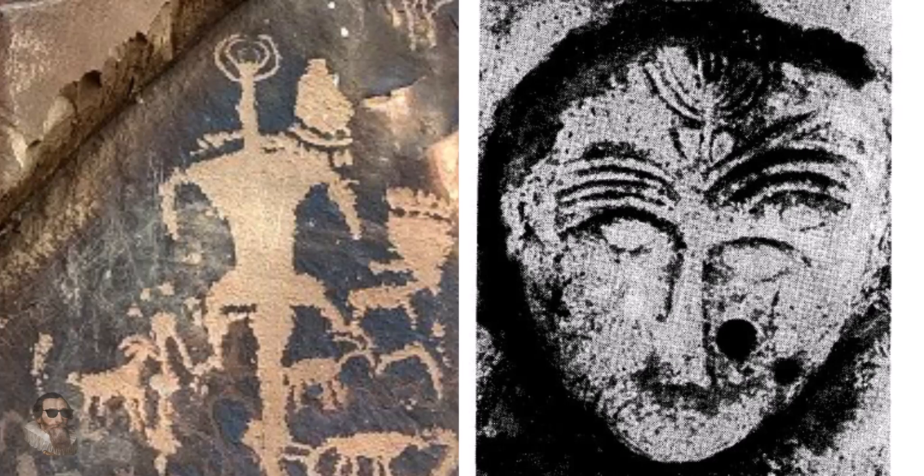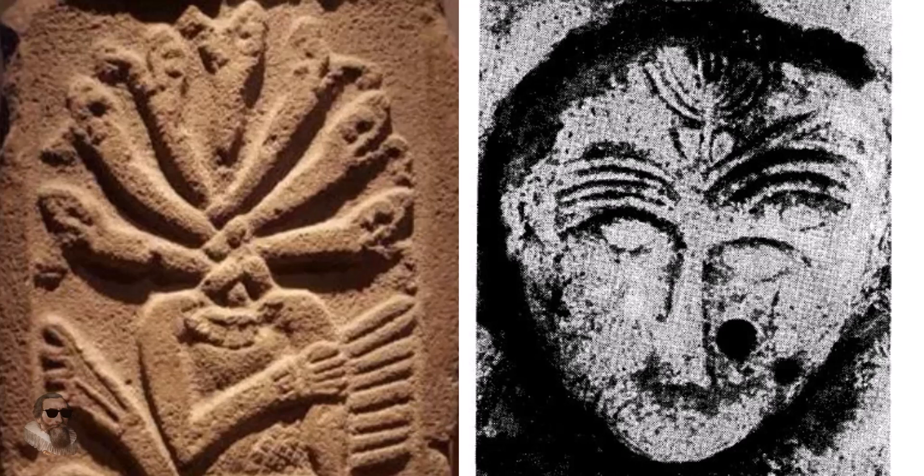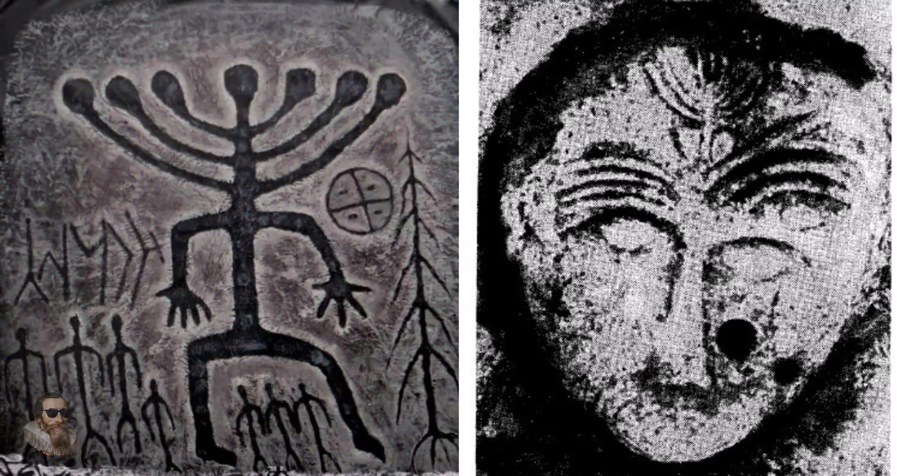This carving in Australia serves as a compelling data point in a growing global pattern — the same geometry, the same placement, the same anthropomorphic translation, the same plasma consistent structure, found all across our planet. Whether we call this form the menorah, the Squatterman, a sky god, or an ancestral spirit, the form is unchanged no matter where we look on our planet.